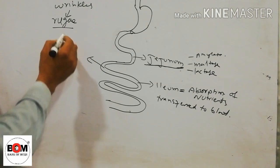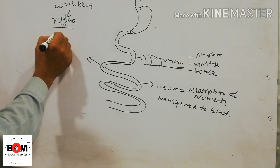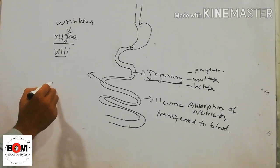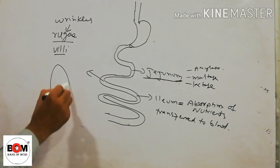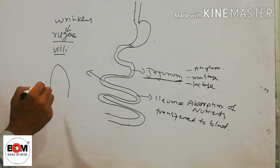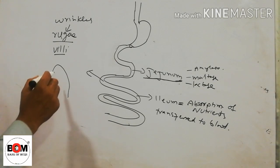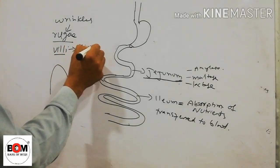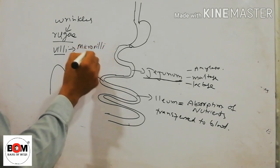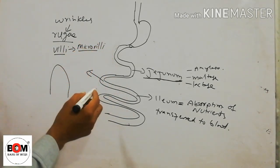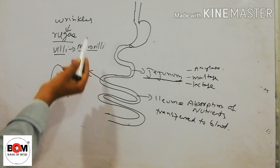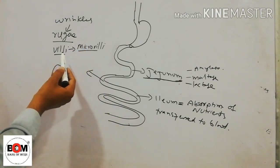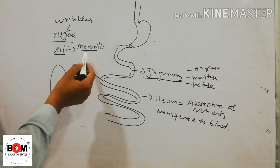The ileum also consists of finger-like projections called villi. These finger-like projections contain microvilli. So the ileum consists of wrinkles called rugae, and in the rugae there are villi, and in the villi there are millions of microvilli.